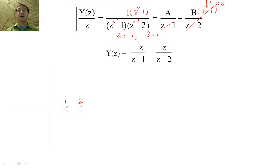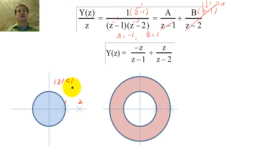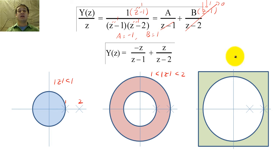Absolute value of Z is less than both poles, absolute value of Z is between the poles, and the absolute value of Z is greater than both poles.